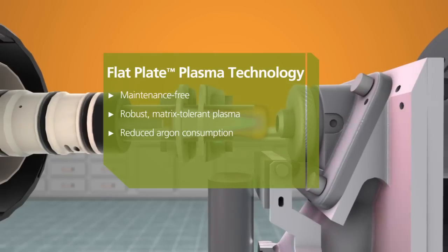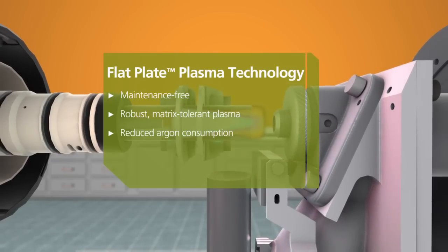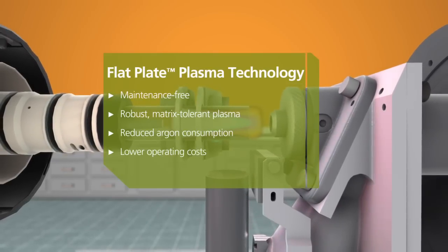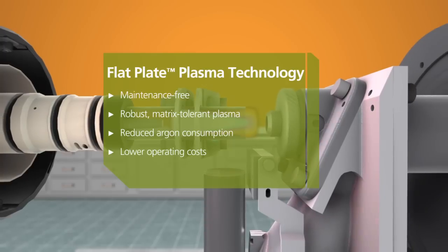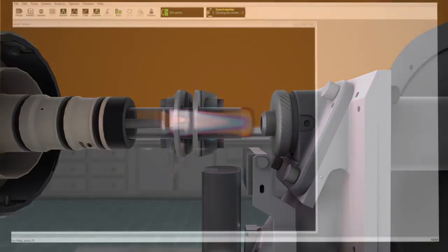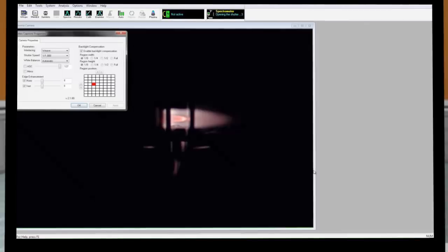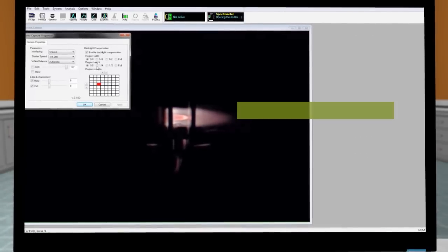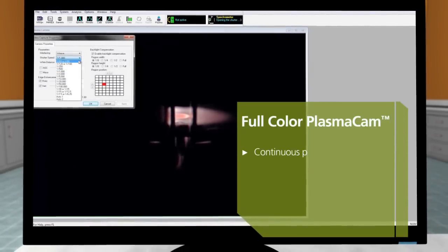Flat plate plasma technology offers a whole new approach to RF generation that minimizes operating costs without compromising performance. The Optima 8000 series even features an integrated color plasma cam that allows you to continually view and monitor the plasma for simpler method development.